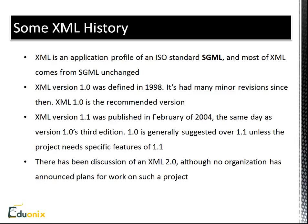Here we have some XML history. XML is an application profile of an ISO standard SGML, which HTML also derived from. Most XML comes from SGML unchanged. XML version 1.0 was defined in 1998 and it's had many revisions since. XML version 1.1 was released in 2004, but for the most part 1.0 is the standard — that's what people use unless they have a specific need for 1.1, which usually has to do with character sets or foreign languages. We'll be using version 1.0.